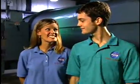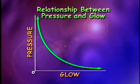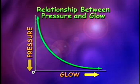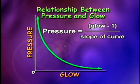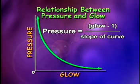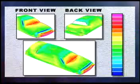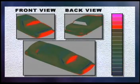That relationship sounds like algebra, and I use algebra in my work every day. The behavior of the luminophores allows us to relate the brightness of the glow to the pressure on the surface using a graph. The curve on the graph shows an inverse relationship between pressure and glow: when glow increases, we know the pressure has decreased, and when glow decreases, we know the pressure has increased. This inverse relationship can be represented with the following algebraic equation: pressure equals quantity glow minus 1 divided by the slope of the curve. Using the graph and this equation, we solve for pressure. The pressures we calculate can be displayed using different colors: red regions show where pressures are high, and blue regions show where pressures are low.